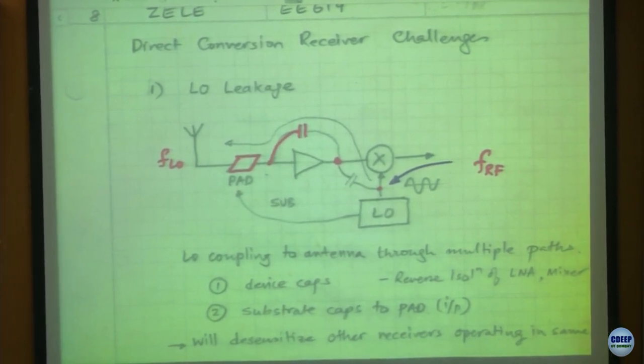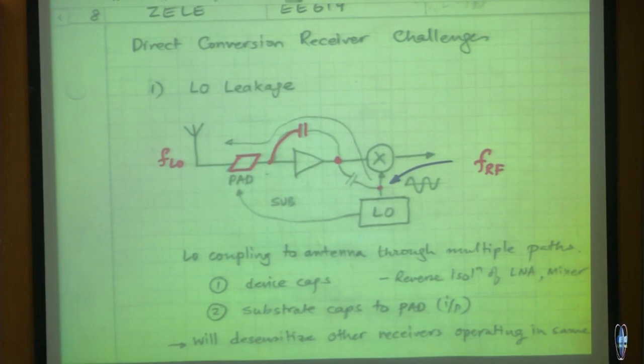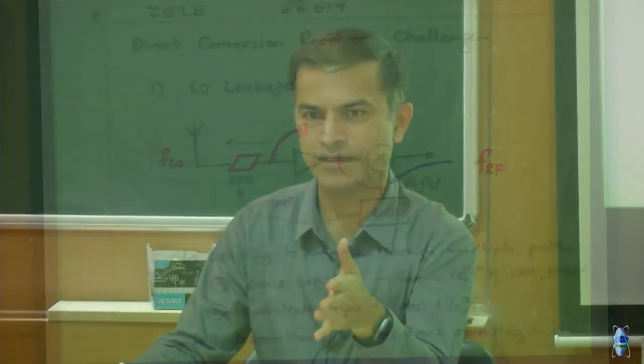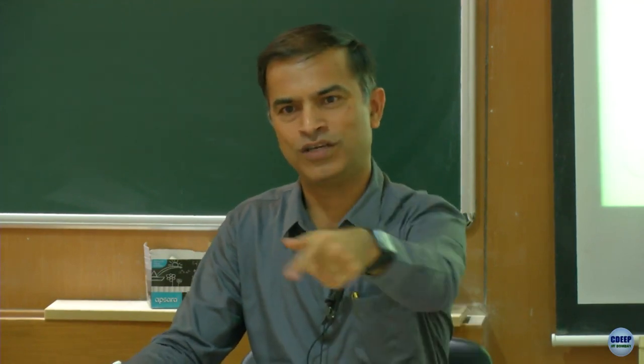This is the LO leakage problem you have to worry about in direct conversion - it is not good. What will happen is there might be somebody else right next to you on the same channel, and you are basically hurting him from receiving a very weak signal. Because you are transmitting - however weak it is, it is very close - so his phone will get desensed. That is the reason LO leakage is important.